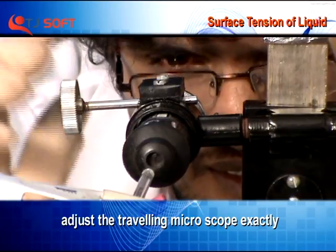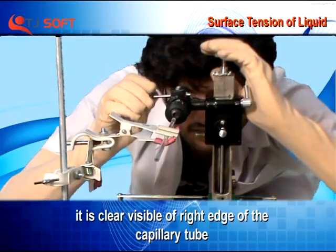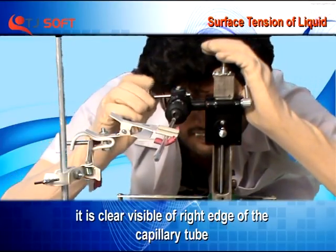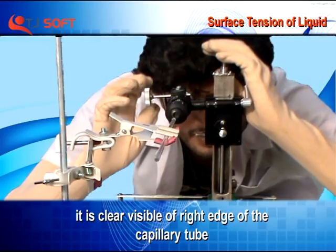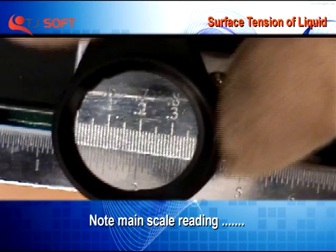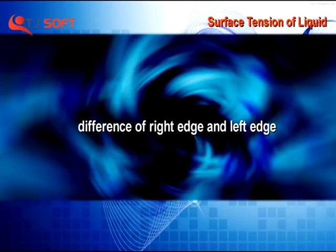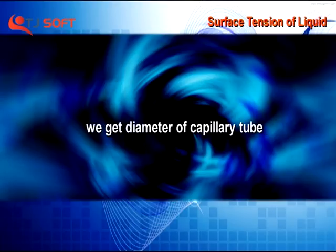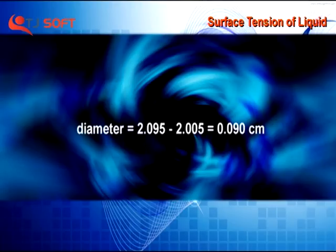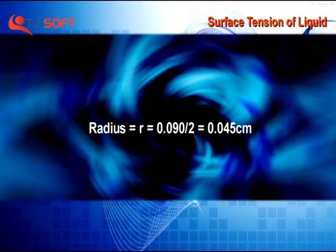Adjust the travelling microscope until the right edge of the capillary tube is clearly visible. Note the main scale reading and vernier coincidence. The right edge reading is 2.095 cm. The difference between the right edge and left edge gives the diameter of the capillary tube. Diameter is equal to 0.090 cm, and radius is equal to 0.045 cm.